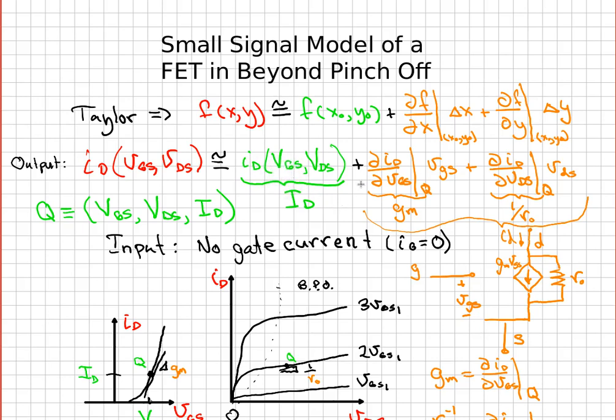And then we can add on the small signal quantity, which is all this stuff over here in the orange. We have the rate of change of I_D with respect to V_GS evaluated at the Q point, where the Q point is this point over here, that's the large signal point, times the little v sub little GS, that's the ΔV_GS.